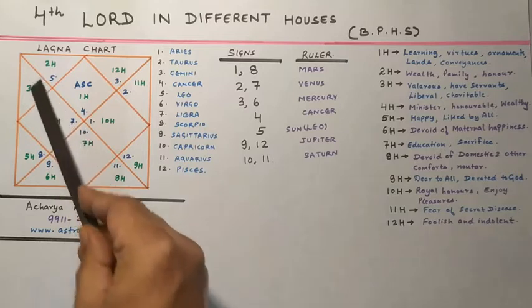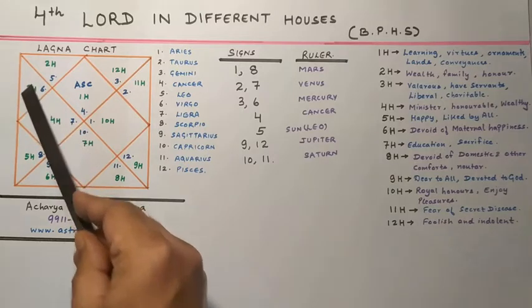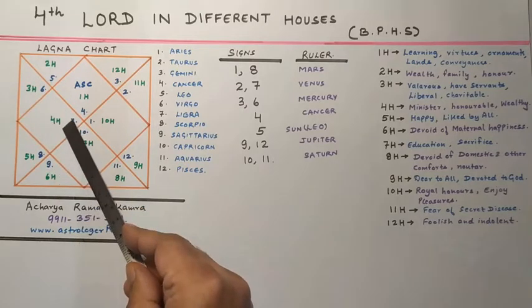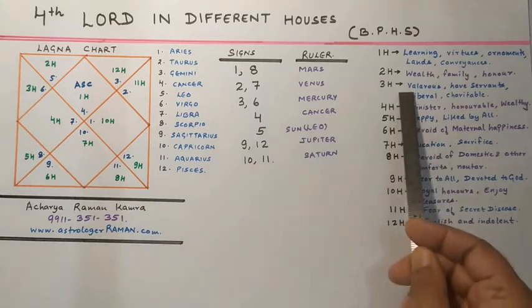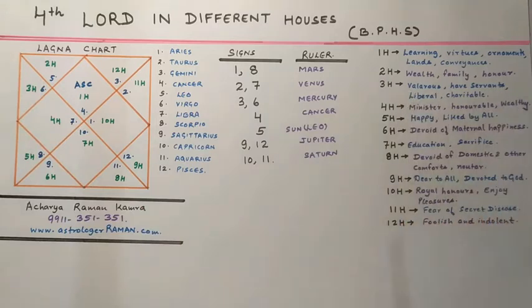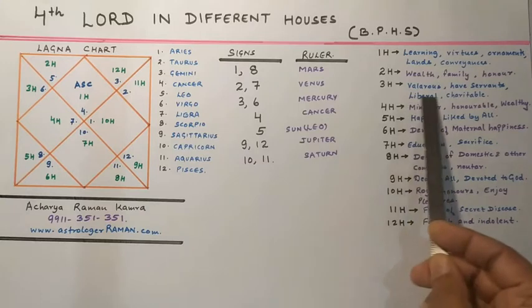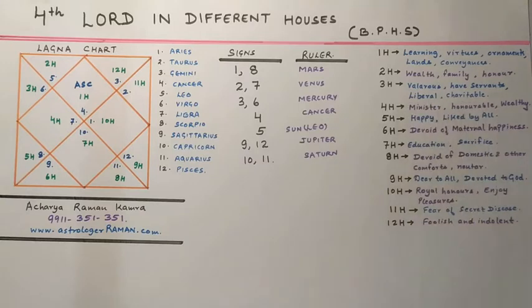If the 4th lord be in the 3rd house, the native would be valorous. He will have servants, be liberal, virtuous, and charitable, and will possess self-earned wealth. He will also be free from diseases.